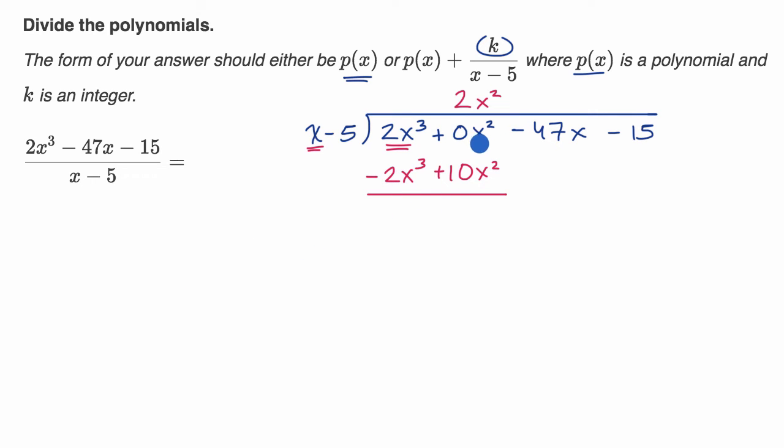All right. So 0x squared plus 10x squared is 10x squared. And then the 2x to the third minus 2x to the third is just zero. And then we can bring down that negative 47x.